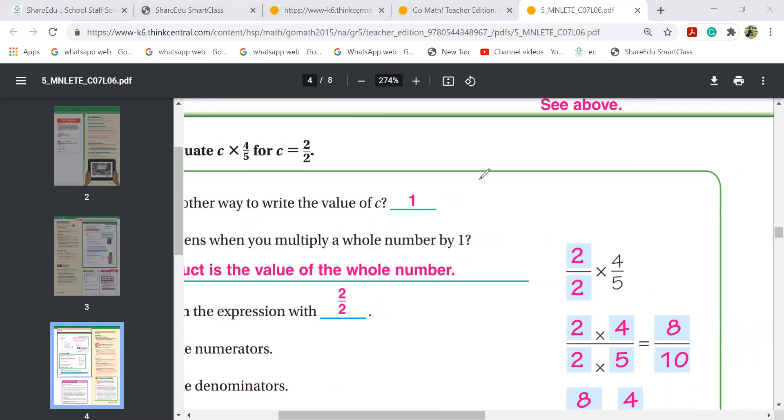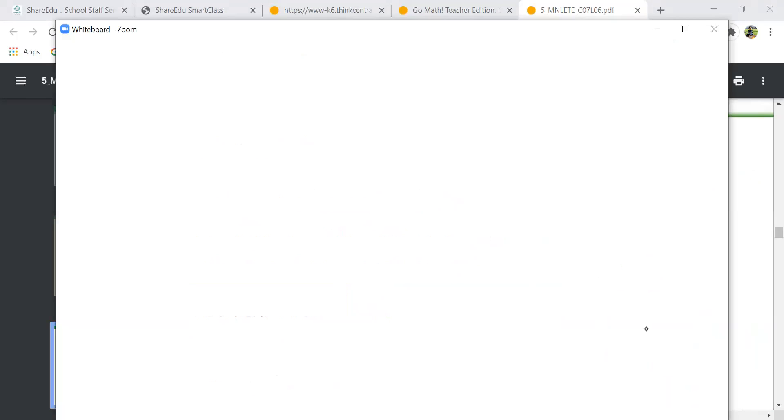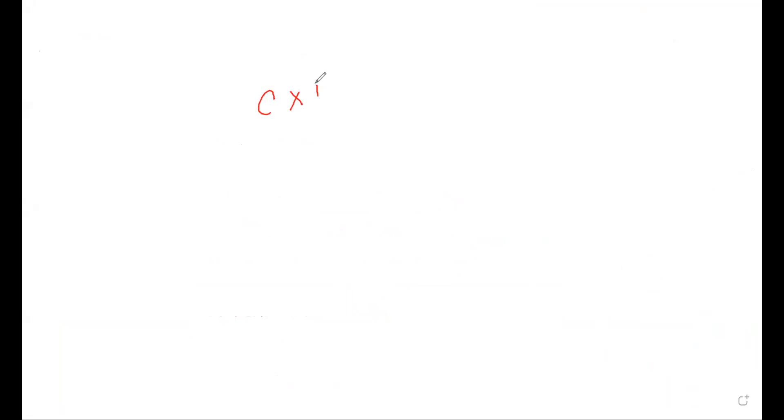This is an algebra type of question. C equals C times four over five. This they gave you. C times four over five. And see what they gave you? C is two over two. This is the question, right? Are you all there? I'm so confused right now. Now what is C given? C is given as two over two. I write two over two. How do you know? They gave you the question here: evaluate C times four over five.